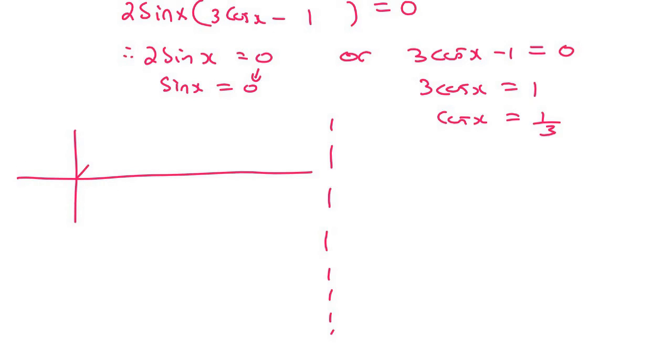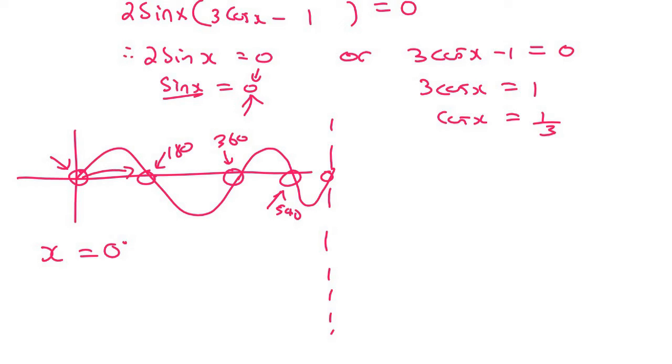So if I draw a basic sin graph, I know that it hits 0 here, here, here, and if I had to keep going, that would obviously continue. So I can simply say that the answer is going to be, you say that this graph will be equal to 0 at 0 degrees. And then, let's see, this is 180, this is 360, this would obviously be 540, so it looks like it jumps every 180 degrees.